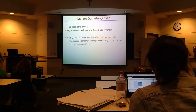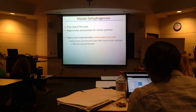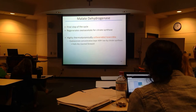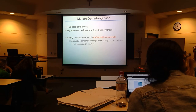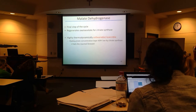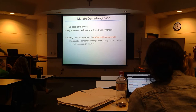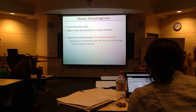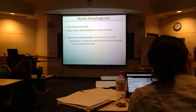So that is malate dehydrogenase — the final step of the cycle. We get our oxaloacetate back. Oxaloacetate is a pretty important molecule — it has very important implications for gluconeogenesis as well as the citric acid cycle. Generally, the amount of oxaloacetate is kept pretty low, since this reaction is not really that spontaneous. Just enough forms so that it can kick off the start of the citric acid cycle and keep it going. Typically the levels of oxaloacetate are relatively low overall.